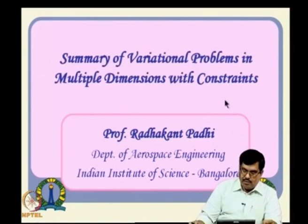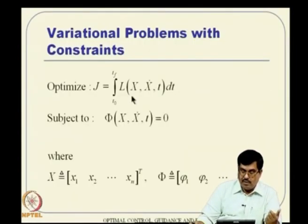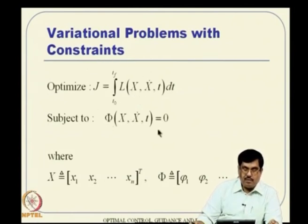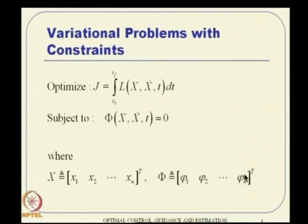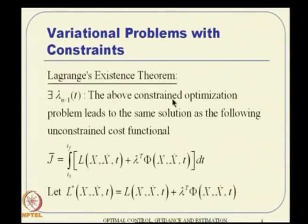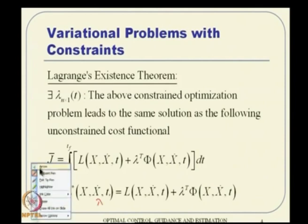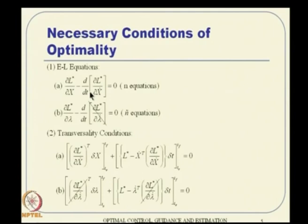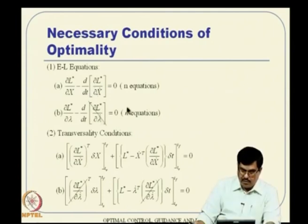What is the summary of variational problems in multiple dimensions with constraints? We are looking for optimizing a cost function along with general equality constraints, where x is n-dimensional and phi is ñ-dimensional. We discussed the Lagrange existence theorem, which led us to the definition of L-star — a function of lambda as well.